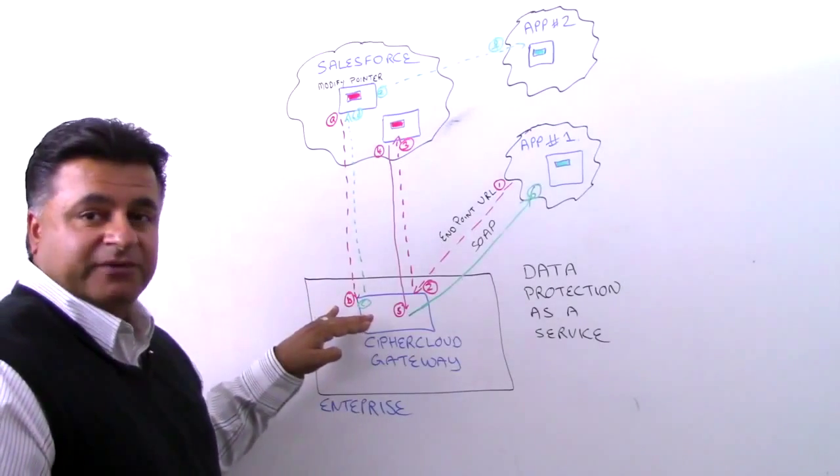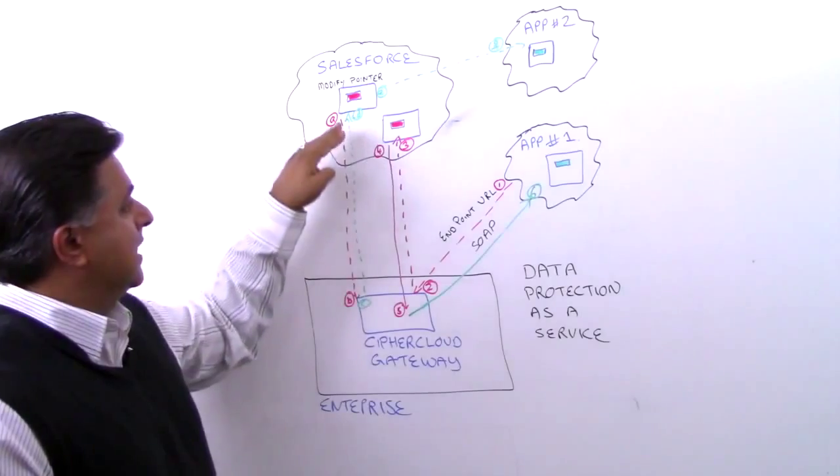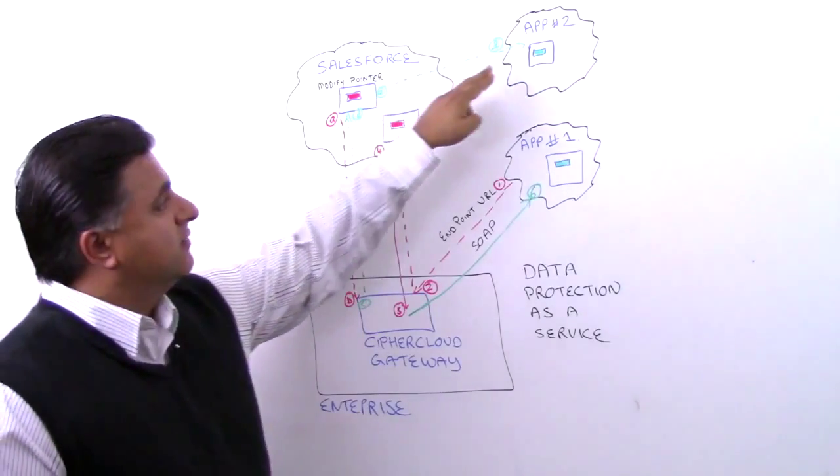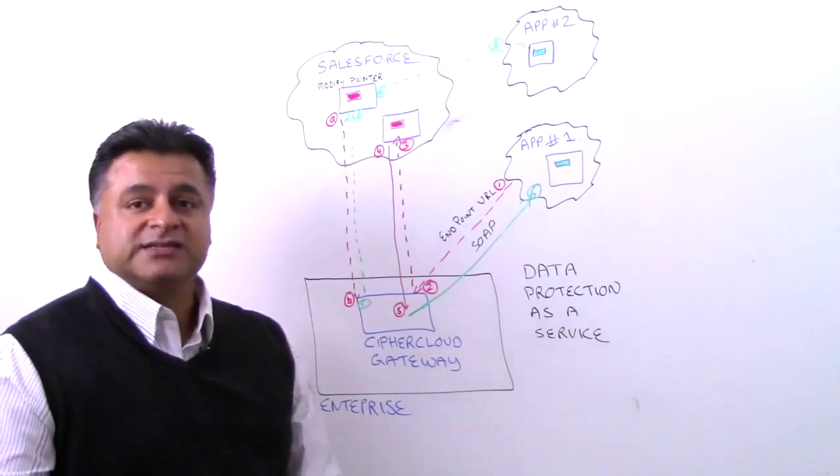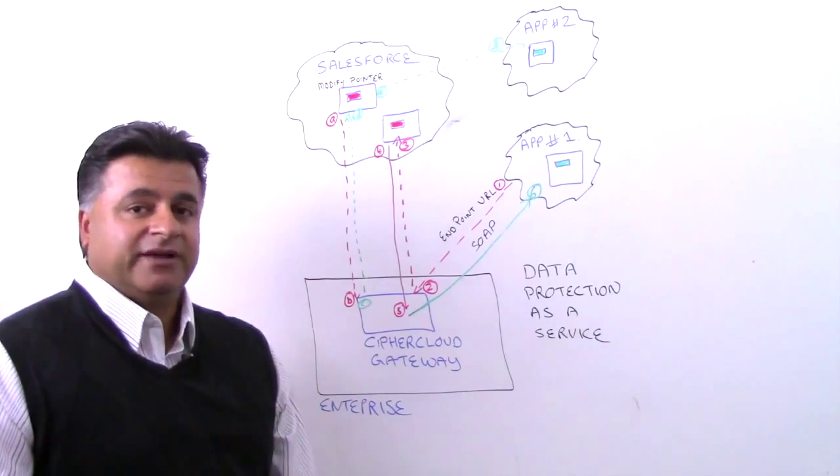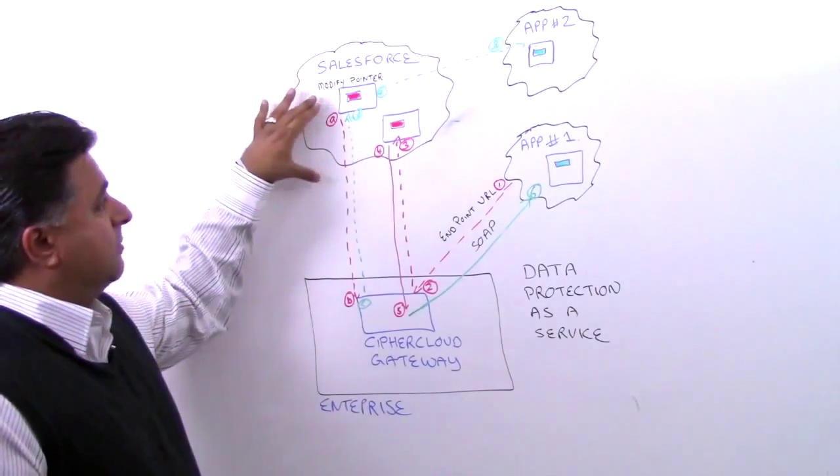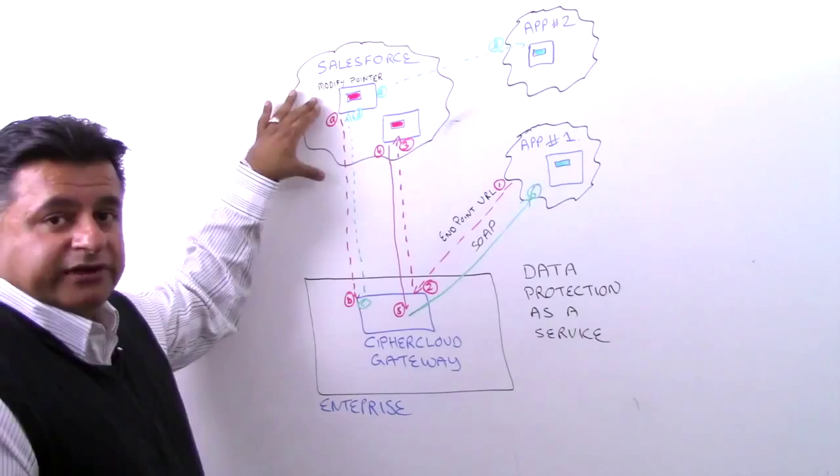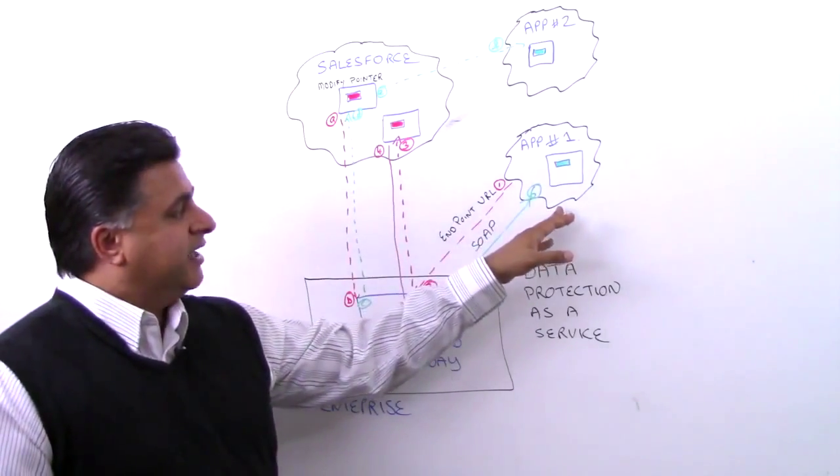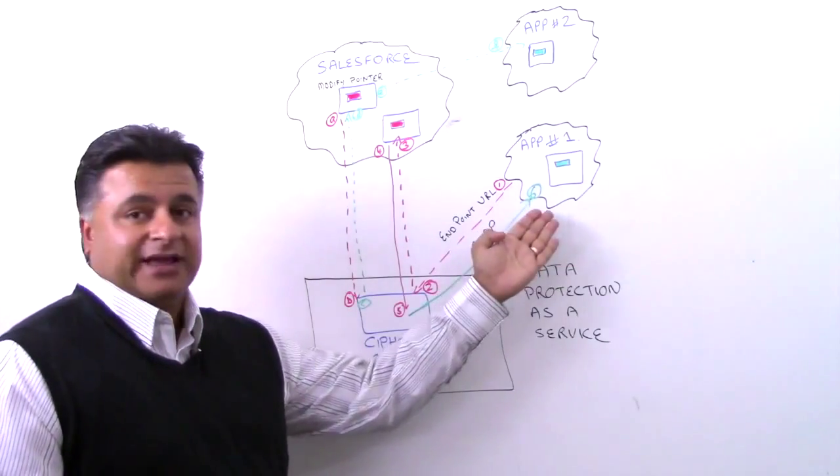And then we conduct our decryption or detokenization activity. We then forward that information in clear text in step D, and then we forward it along to the application so it can do its processing or further activity based upon that clear text information. This is an example of server side or modification of the pointer or URL in comparison where on application one, we're changing the endpoint URL within that application.